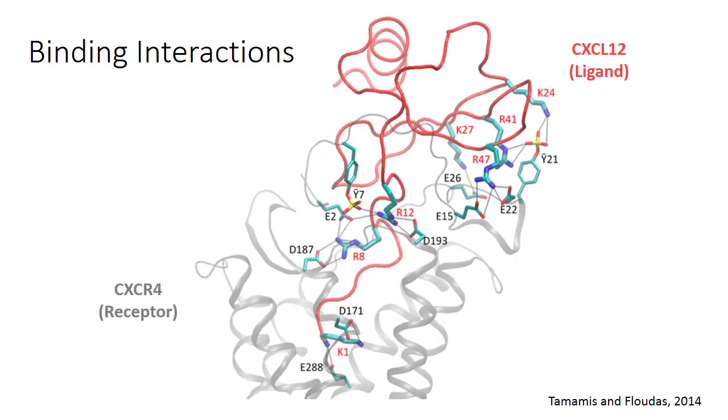In this visual, key salt bridges that hold the ligand to the receptor are illustrated. Asparagine-171 and glutamine-288 bind to lysine-1, asparagine-187 binds to arginine-8, and asparagine-193 binds to arginine-12.